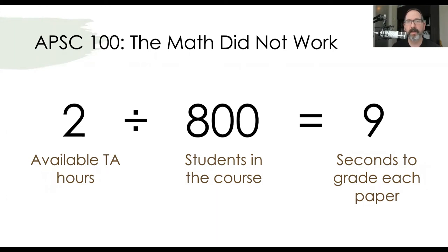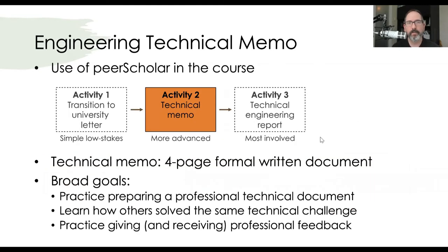Peer Scholar came along and this was a great opportunity to really enrich the entire process from multiple dimensions. In our first-year introduction to engineering courses, we have three main activities that use Peer Scholar. The first is a simple letter where students write text directly into the Peer Scholar tool — meant to get them familiar with the process but also provide meaningful feedback related to transitioning to university. I'm going to talk about the second activity, which is a technical memo. We also have a follow-up activity after that which is even more complex.